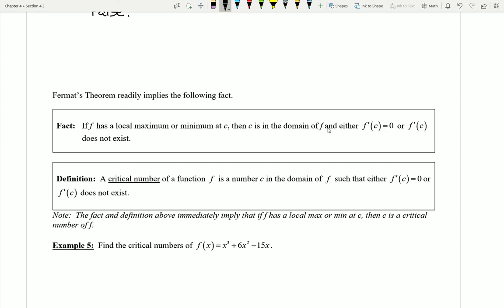If a function has a local min or a max at c, then c is in the domain of f and either we're going to again have at that local min or max a tangent line of slope zero or a tangent line slope that does not exist. And so we're going to look for again all the points that could make our derivative equal to zero or not exist.